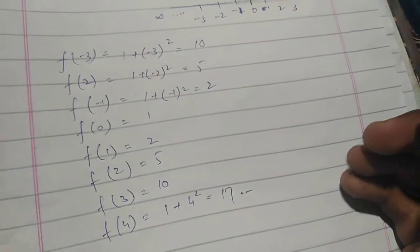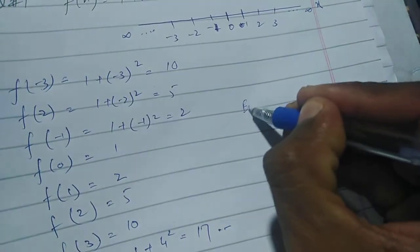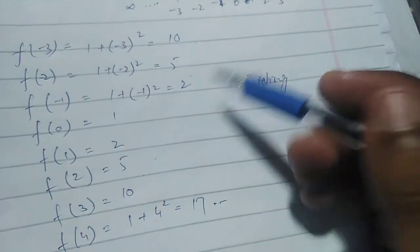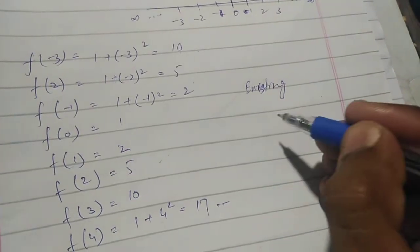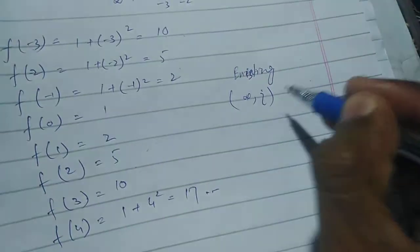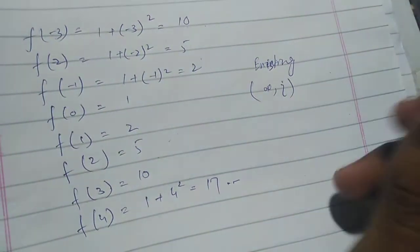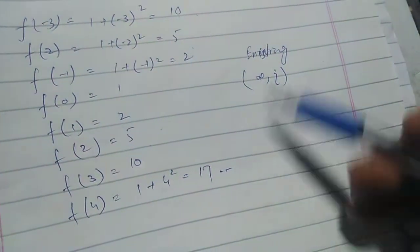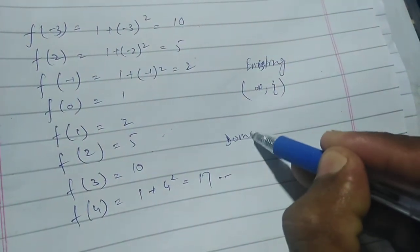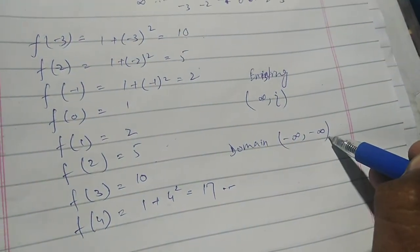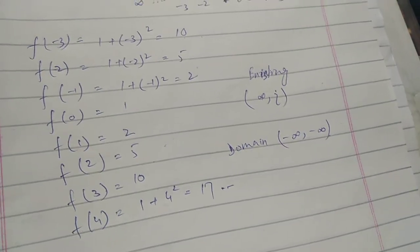What is the meaning of 'exists' and 'not exists'? If your answer is a regular number or a floating point number, the answer exists. But if your answer is in the form of infinity or undefined, the answer does not exist. Since we put 7–8 values and the answer exists each time, our domain will be from minus infinity to positive infinity.